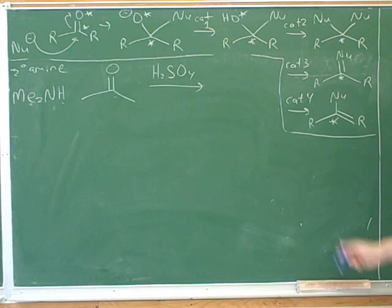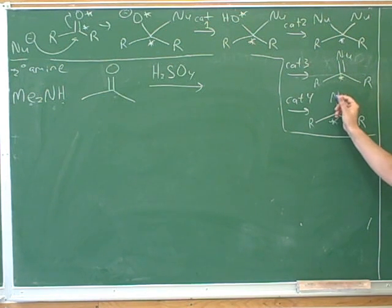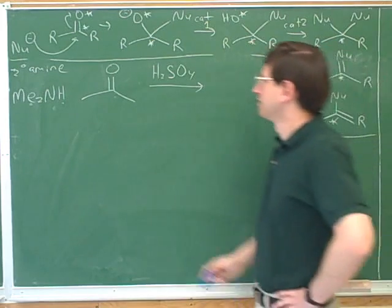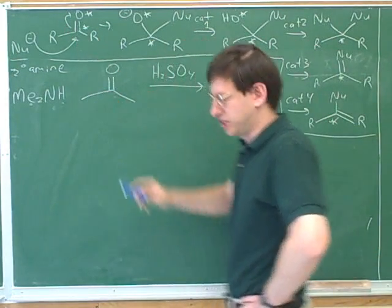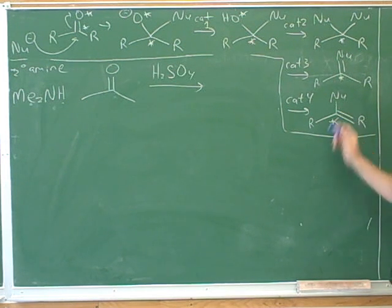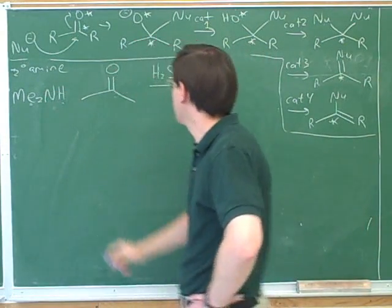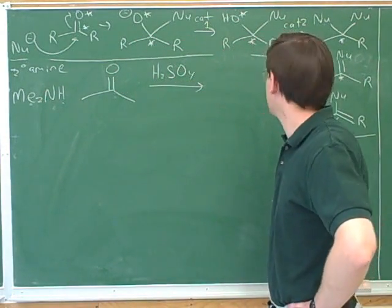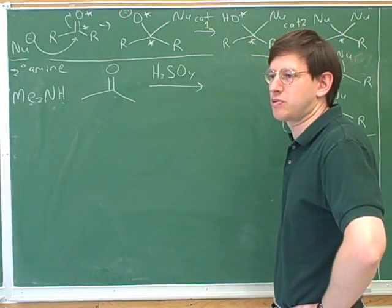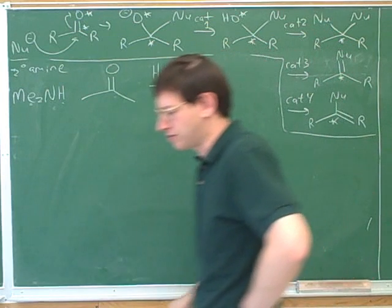Those are going to be the two attacks here that completely kick off the carbonyl oxygen. First, the nitrogen is going to attack. That's going to break the pi bond to the carbonyl oxygen. And then this adjacent carbon is going to attack and form a pi bond. And that's going to completely kick off the carbonyl oxygen. We can't have the nitrogen attack twice because it only has one proton here. But we can go through that mechanism. Well, the beginning of the mechanism is exactly the same as for Category 3. It's only the last half will be different. So we should be able to do the beginning of this together. So let's go through the mechanism.